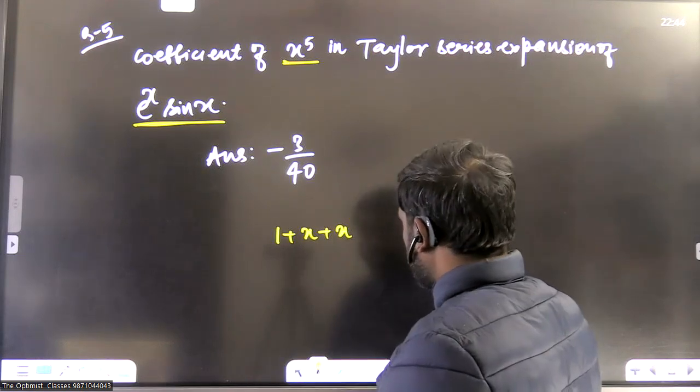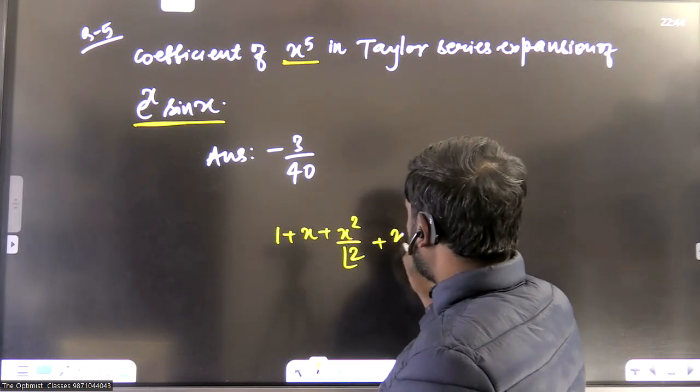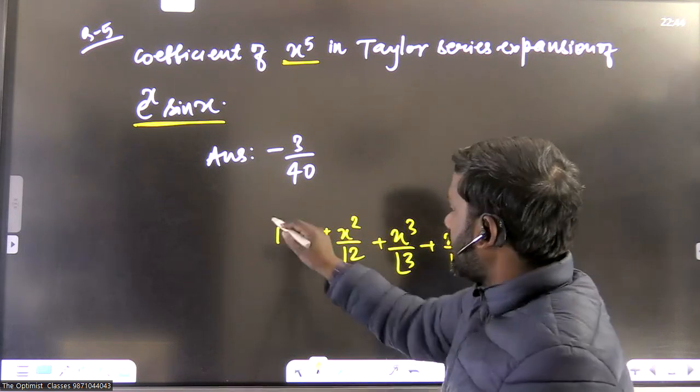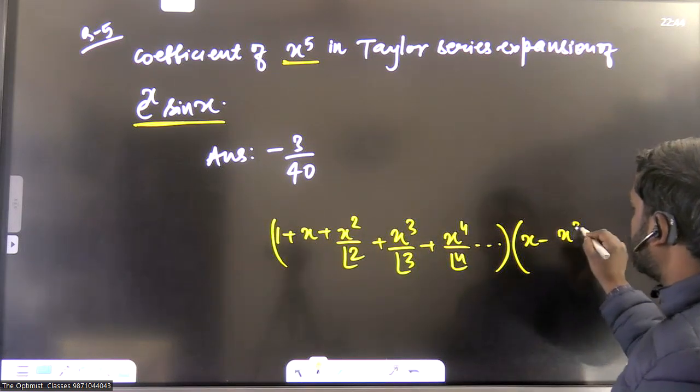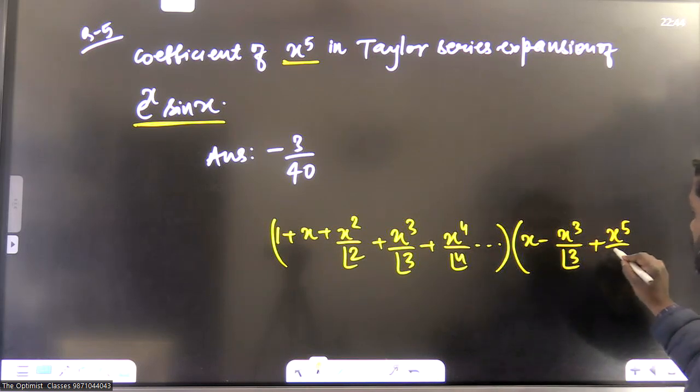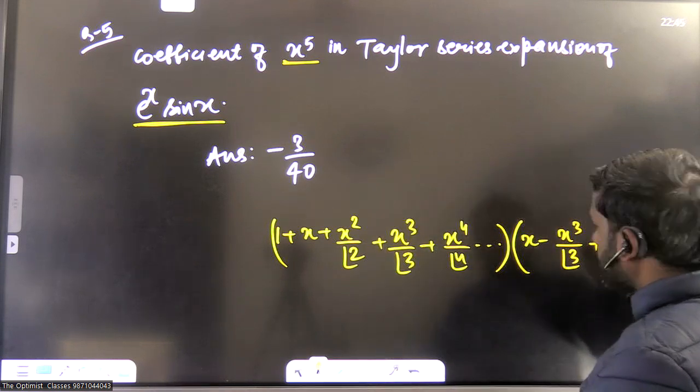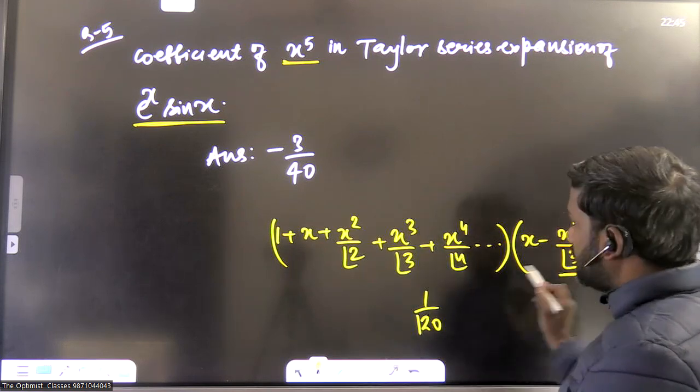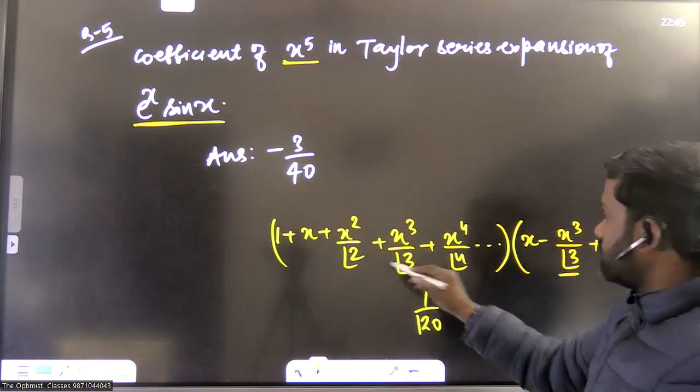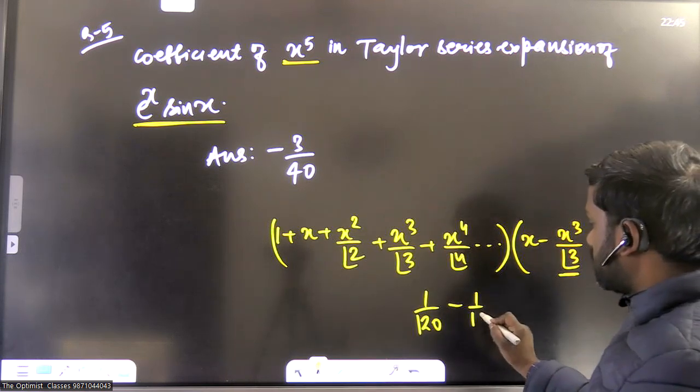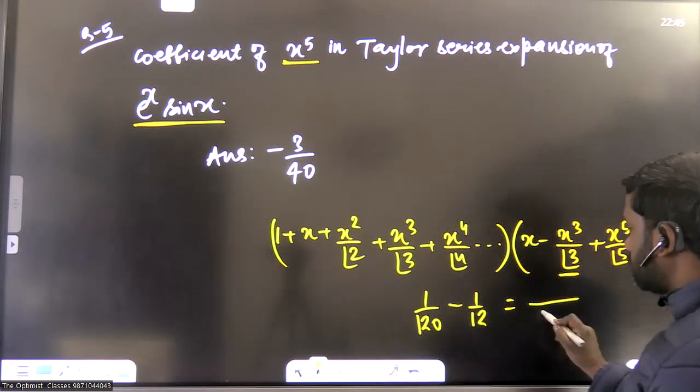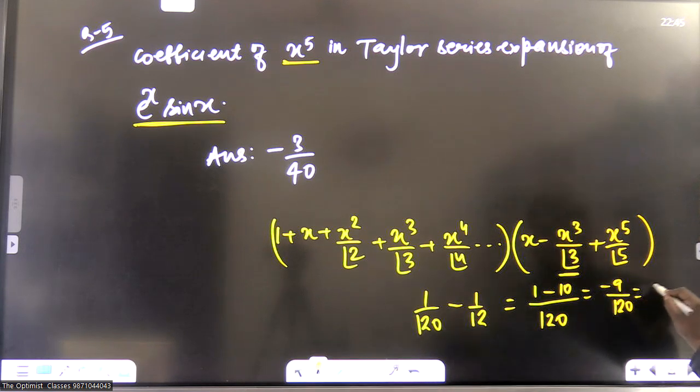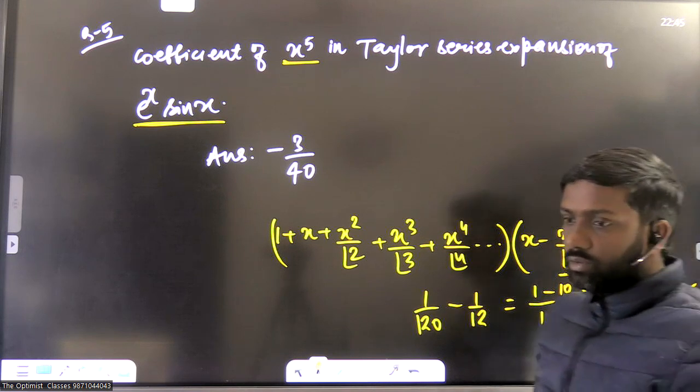You write like this: 1 plus x plus x square by factorial 2 plus x cube by factorial 3, x to the power 4 by factorial 4 and so on. And write expansion of sine x. This is x minus x cube by factorial 3 plus x to the power 5 by factorial 5. Now you want to calculate coefficient of x to the power 5. If x to the power 5 multiplies with 1, you will get x to the power 5, so coefficient will be 1 by 120. And when this x cube multiplies with this x square, you will again get x to the power 5. From here, you will get 2 and from here 6, so there will be 1 by 12. So now if you calculate it, you will get 120 and here 1 minus and here you will get 10. So this is minus 9 by 120, which equals minus 3 by 40. So that's the answer. This was quite easy question.